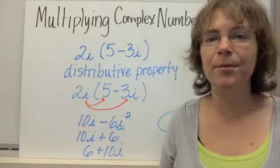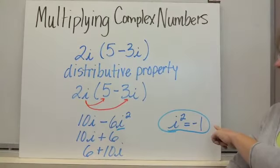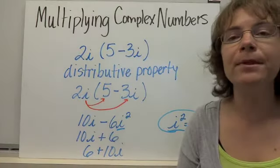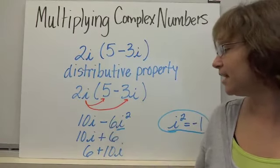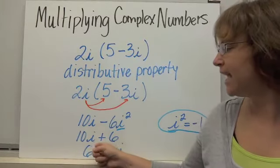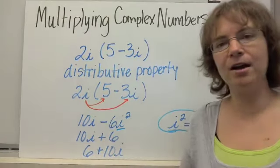2i times 5 gives us 10i, and 2i times negative 3i is negative 6i squared. Here's where we need to remember that i squared is negative 1, so we replace that i squared with negative 1. We have negative 6 times negative 1, which is positive 6. So we have 10i plus 6, but we write the real part first: 6 plus 10i.